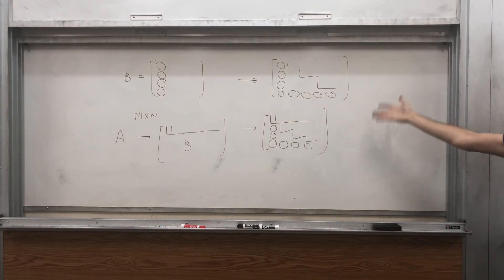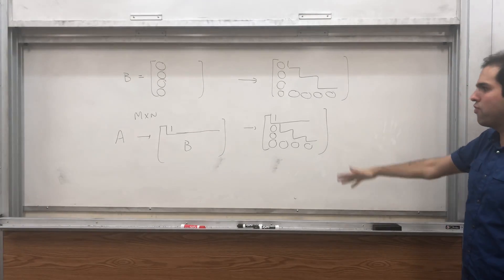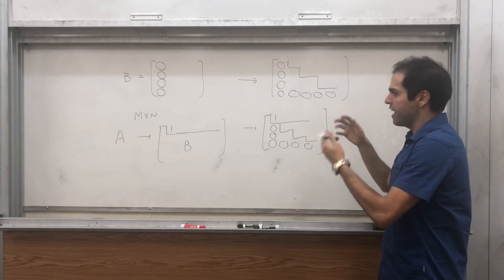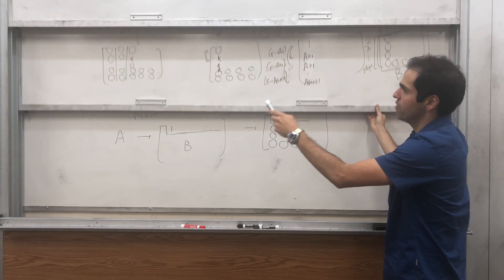And then the question is, why is this in row echelon form? So first of all, are all the zero rows at the bottom? Yes, precisely, because of this thing.